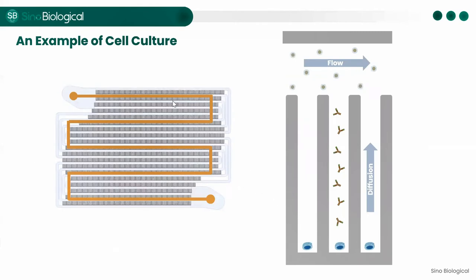During cell culture, culture media flows through the channel at a relatively low speed, so nutrients can enter the nanopans from the channels through diffusion. At the same time, metabolic waste can diffuse from the nanopans into the channels and circulate out of the chip. Larger particles such as cells or microbeads remain stable in the nanopans, unaffected by the mobile phase, enabling long-term dynamic cell culture observation and analysis. Because the nanopan volume is in nanoliters — one ten-thousandth of a single well of a 96-well plate — the concentration of cell secretion is relatively high even at the single-cell level, making single-cell level detection easily achievable.